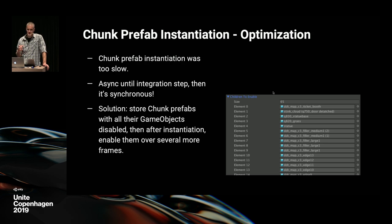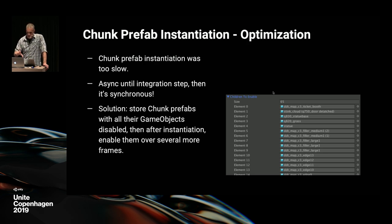Even with that, the prefab itself was still hitching when it loads. Part of that synchronous step that was the problem was enabling all the new objects. We're not doing that much in awake or on-enable, but there's just a lot — it's a big hierarchy. The best way we found to mitigate this is to store all the game objects inside that chapter prefab as disabled, then after the prefab loads, over the next several frames, we enable all those game objects back to their original state in batches spread across a couple of frames. It wasn't a big chunk of time, but it was enough to move that out of the instantiate call, and that took care of all the hitches we were getting.